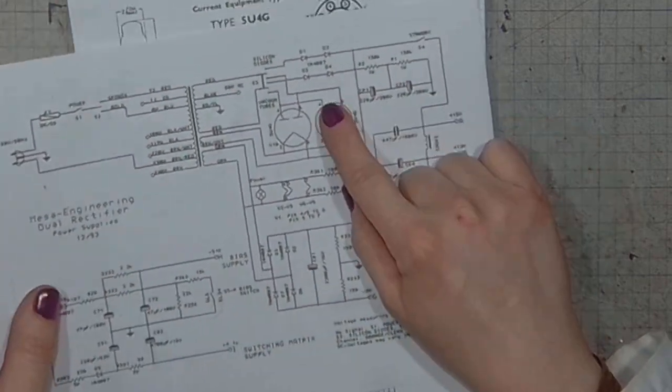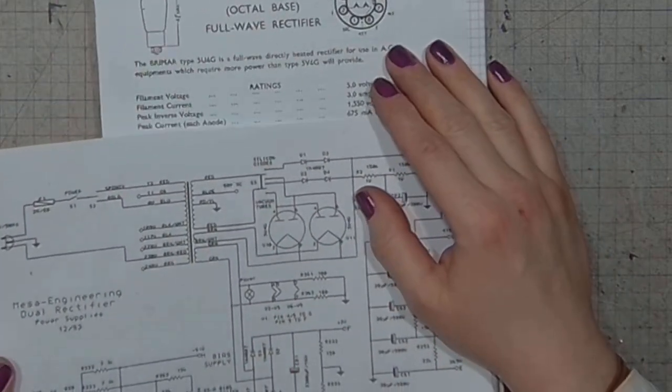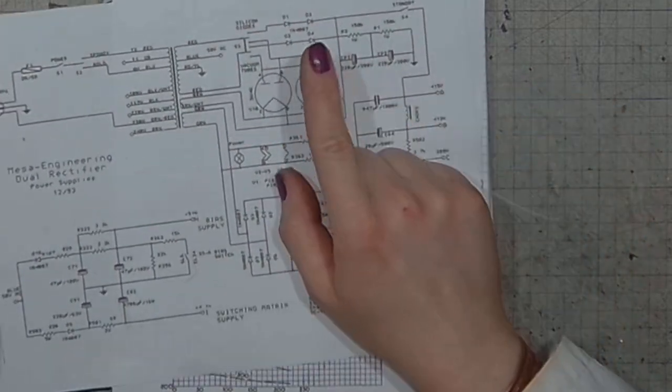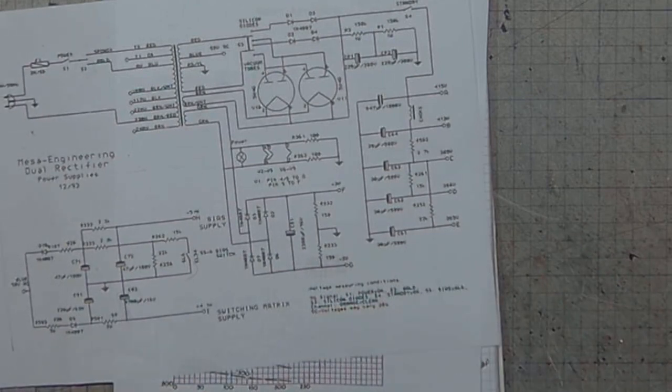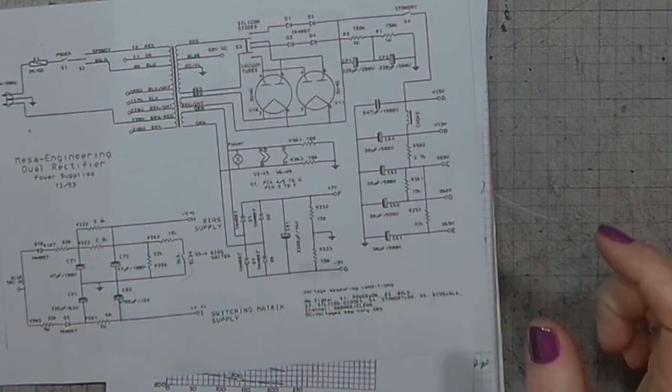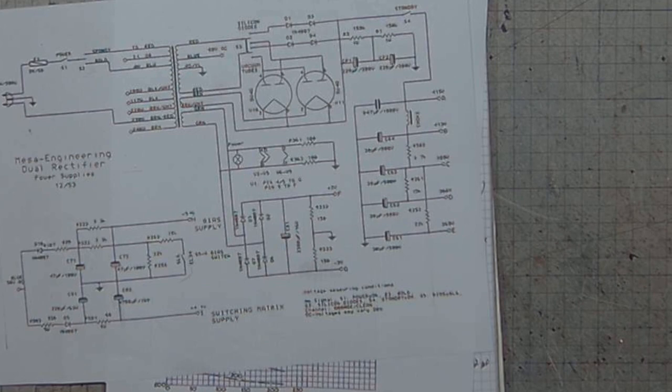And since those tubes are indirectly heated, the high load, the low impedance load posed by the discharged capacitor during the switch-on period will lead to very fast degradation of the cathode, shortening the tube's lifespan.